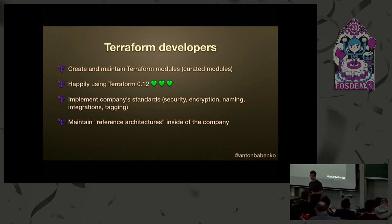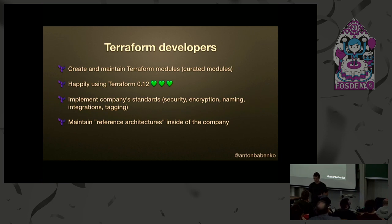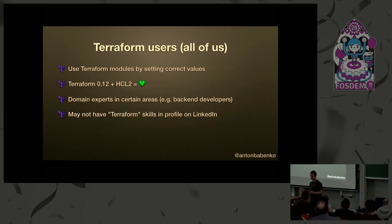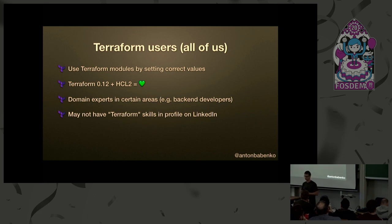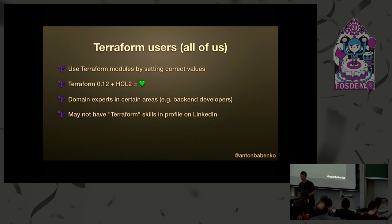What I believe: there's a group — typically DevOps engineers — who know AWS, providers, company standards, security, and encryption. Their output should be a reference architecture published and maintained inside the organization. They happily use all features of Terraform 0.12. On the other hand, Terraform users just go to the wiki, see what solutions exist, pick an existing module from the reference architecture, and use it to build what they need — without needing to know all the advanced features.